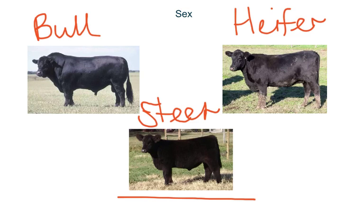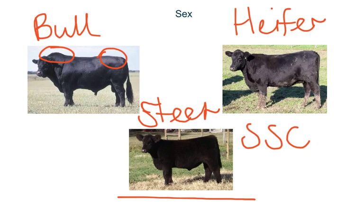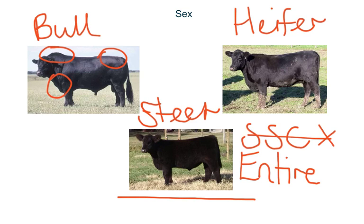Heifers usually get discounted on price — it's thought to relate to tenderness, dropping about 5 points in the MSA score. Steers are not supposed to have any secondary sexual characteristics: the hump and increased musculature in the rump and shoulder areas are secondary sexual characteristics. For some markets, particularly Japanese steers, animals need to be either a steer or an entire male with no secondary sexual characteristics at all, which can be confirmed from the actual carcass.